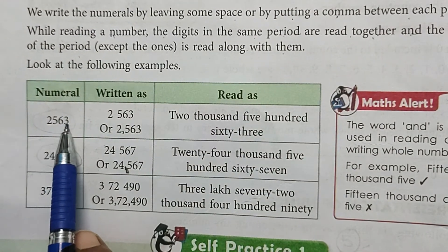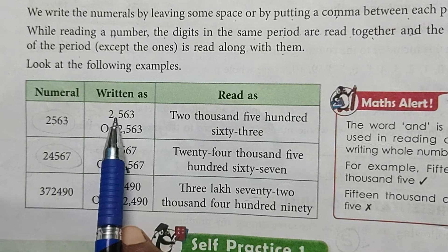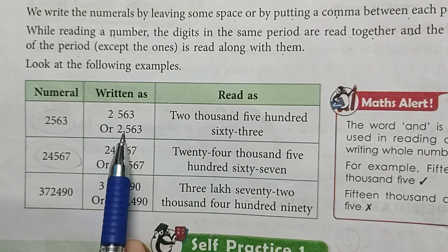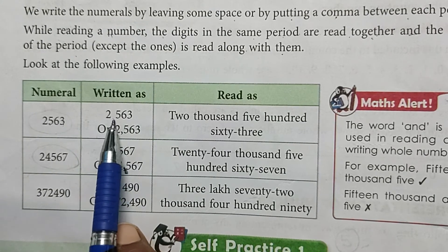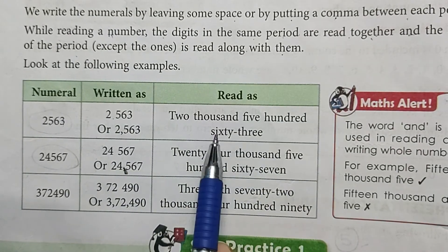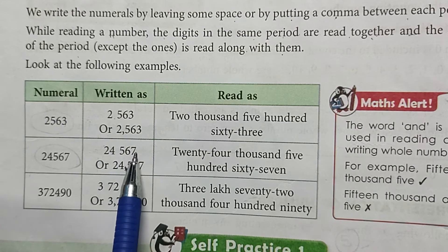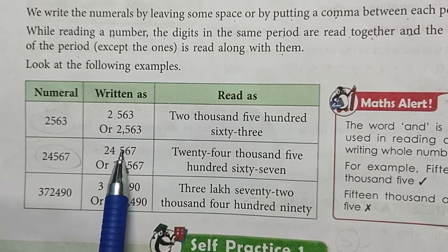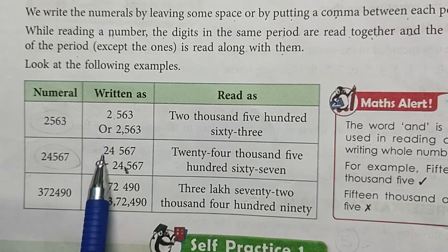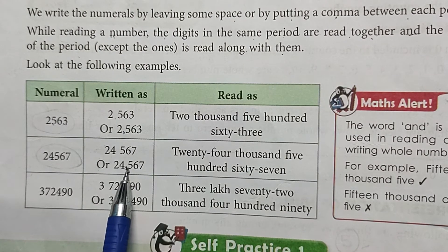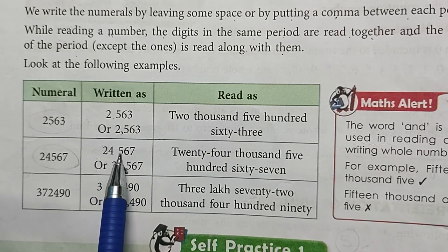For example, 2563 — 4 digit का number है। Right side की first 3 digits (563) अलग होंगी और 4th digit (2) अलग — space या comma लगाकर लिखेंगे: 2,563। पढ़ते समय: 2,000 (thousands period) और फिर 563। Next, 24567 — 5 digit का number: right side से पहली 3 digits 567 ones period में, अगली 2 digits 24 thousands period में। लिखेंगे 24,567 और पढ़ेंगे: twenty-four thousand, 567।